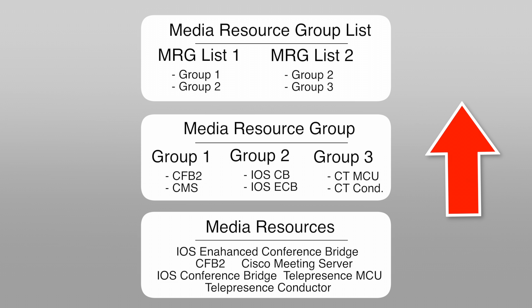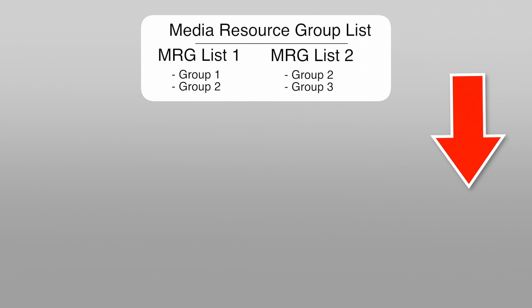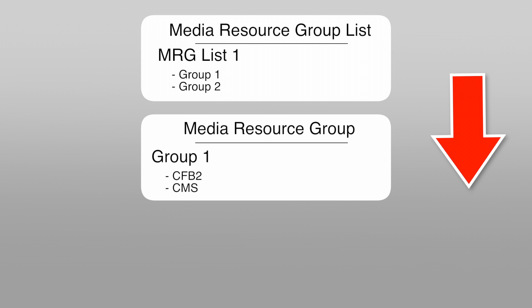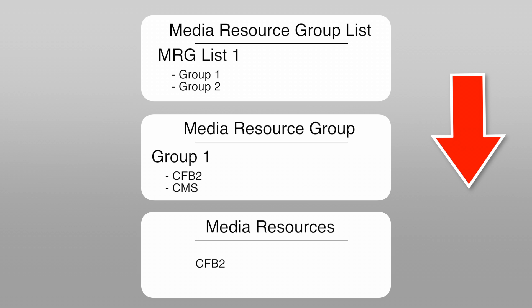When the conference button is pressed a second time, CUCM works top-down and first looks at the media resource group list. With two lists configured, CUCM needs to know which list to use. You can configure this by adding the media resource group list to the device pool the phone uses, or by adding it directly to the phone. Assuming List 1 is added to the endpoint's device pool, CUCM selects List 1, then looks at its groups in prioritized order, and finally chooses an available media resource from the top-priority group.